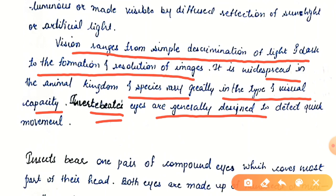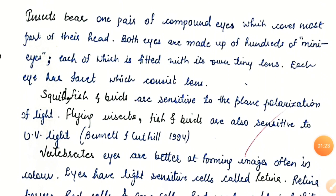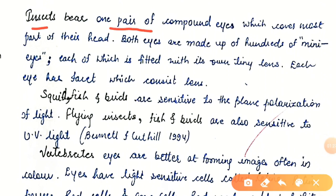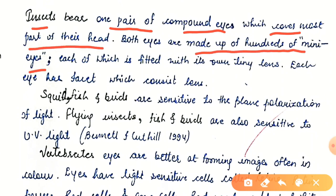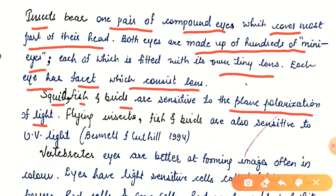Invertebrate eyes are generally designed to detect quick movement. Insects bear one pair of compound eyes which cover most of their head. Both eyes are made of hundreds of mini-eyes, each fitted with its own tiny lens. Each eye has a facet consisting of a lens. In squids, fish, birds, they are sensitive to the plane polarization of light. Flying insects, fish, and birds are also sensitive to UV light — Bennett and Cuthill, 1994.